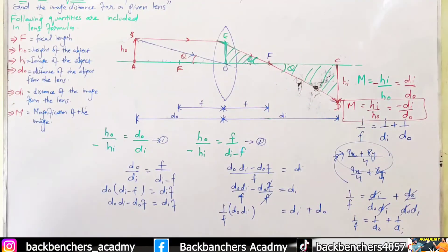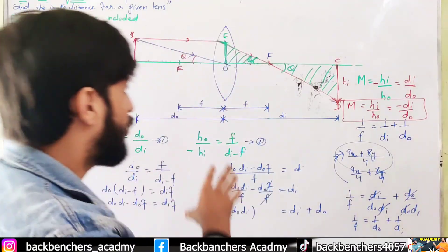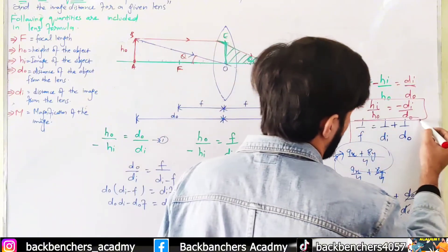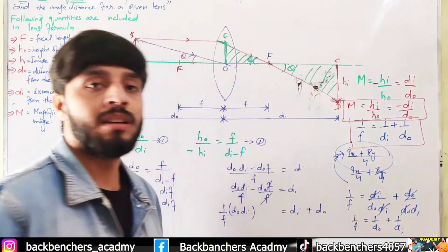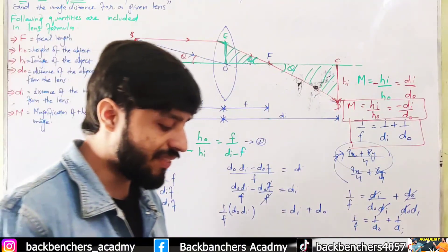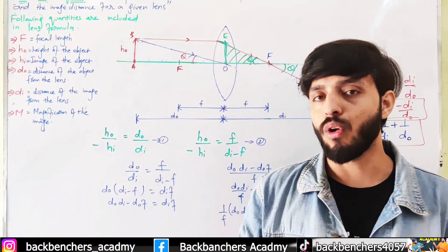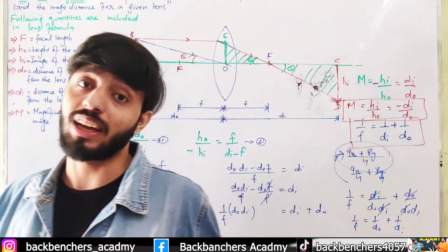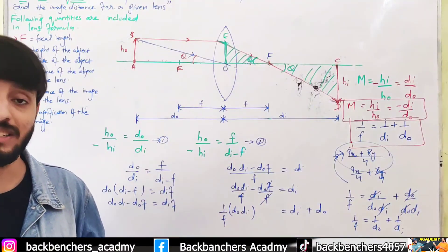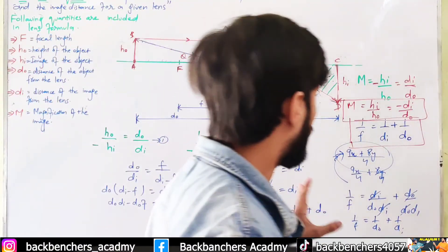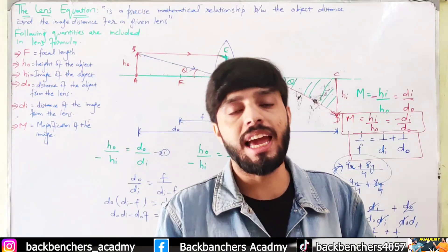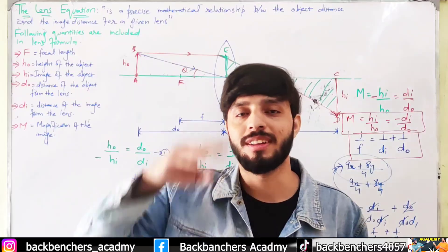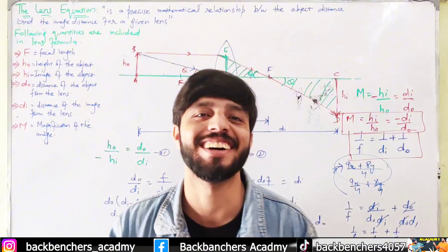Keep in mind that these formulas — the lens equation 1/f = 1/d_o + 1/d_i and the magnification formula — are valid for a convex lens. When using a concave lens, we have to follow a sign convention, and I will make a video on that in the next lecture. Hopefully you understand everything — if you have any questions, ask in the comments. Peace out, see you in the next video!